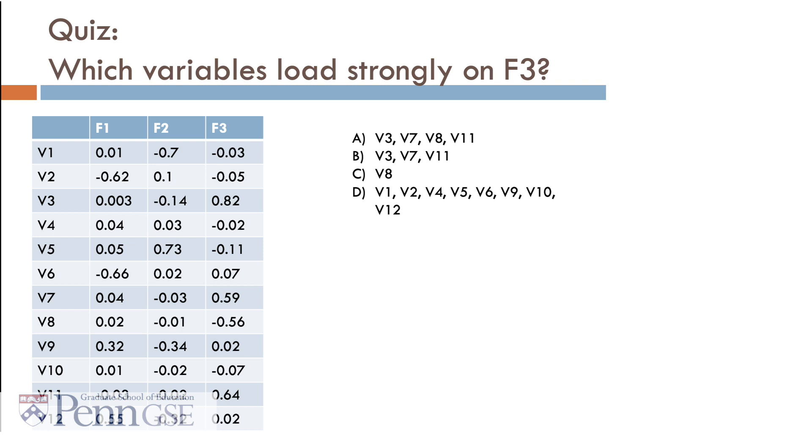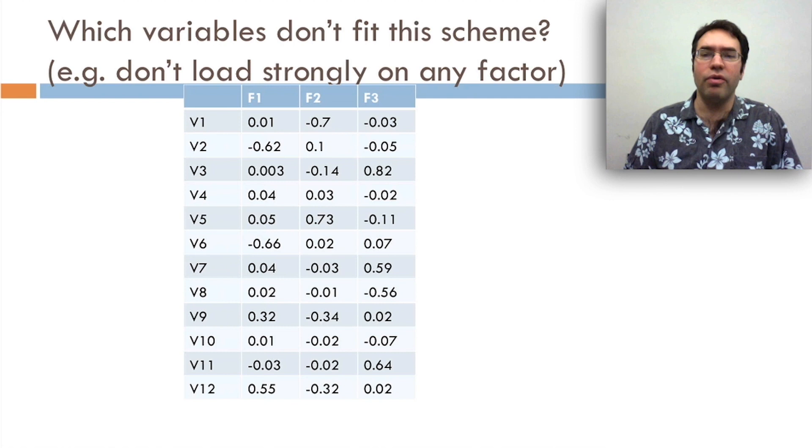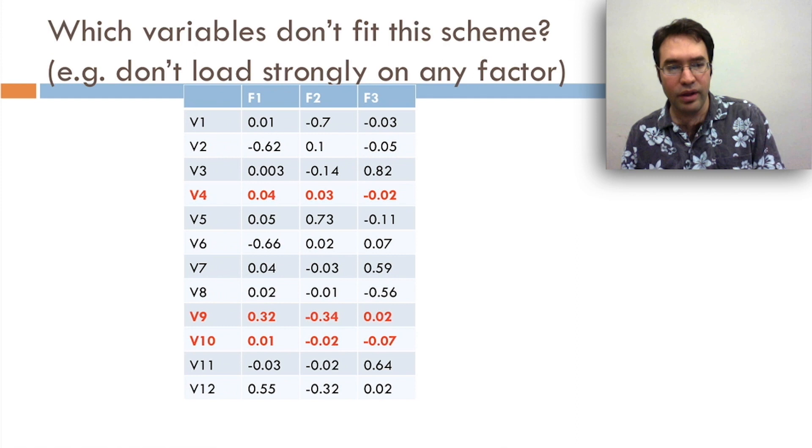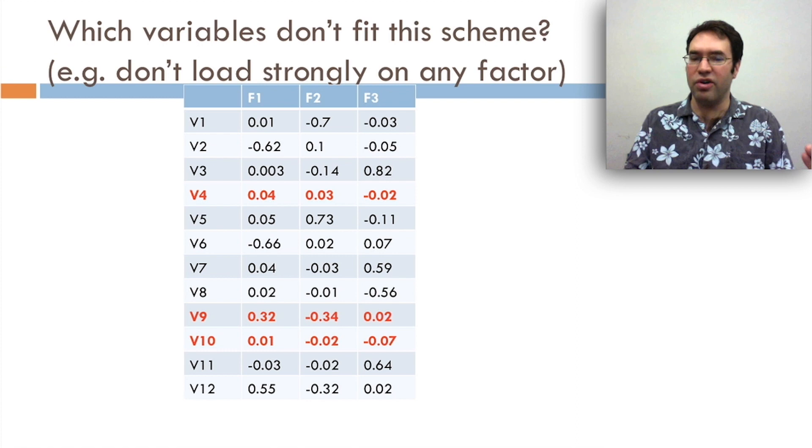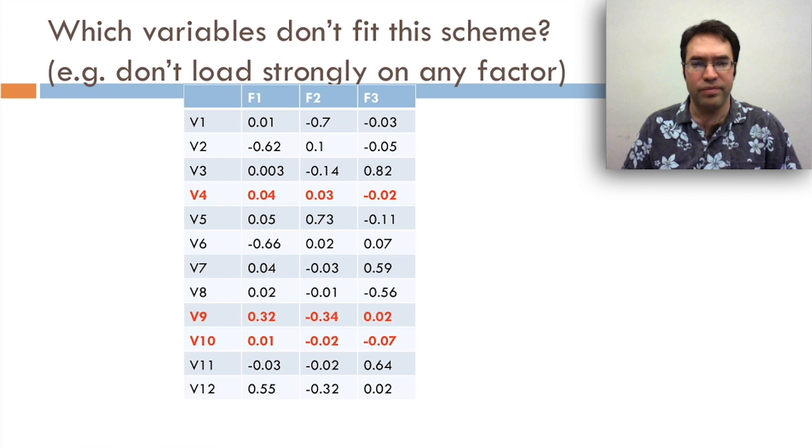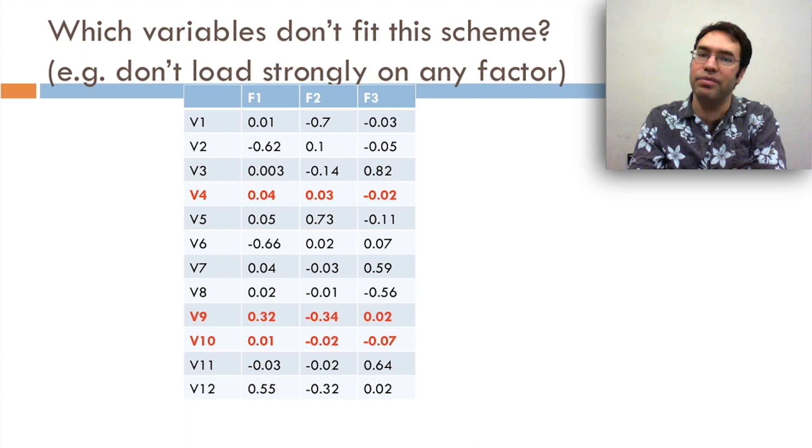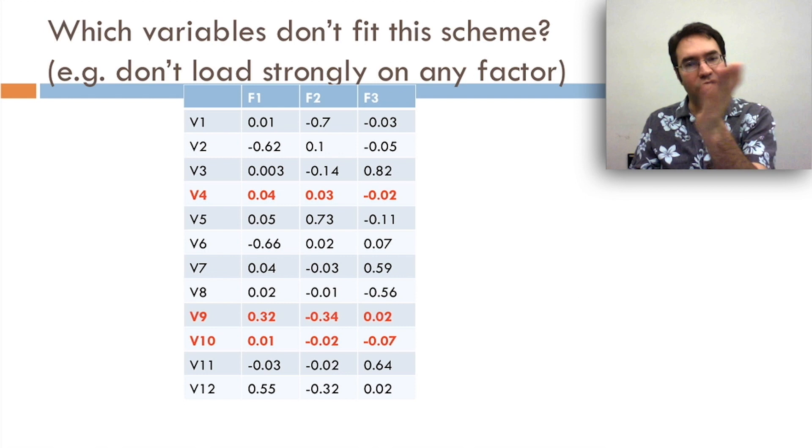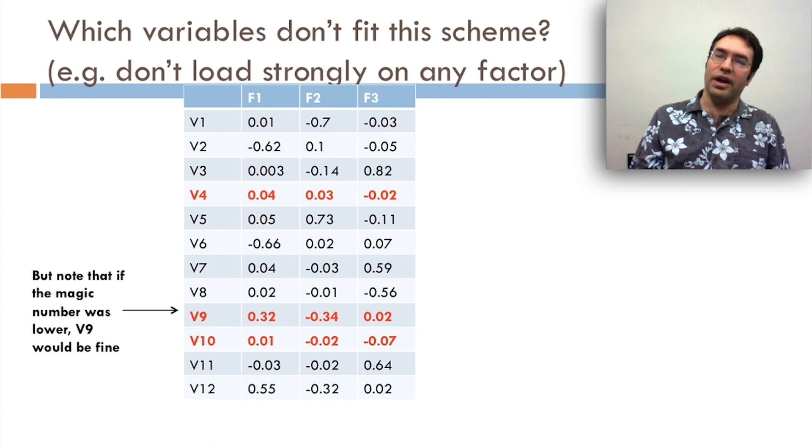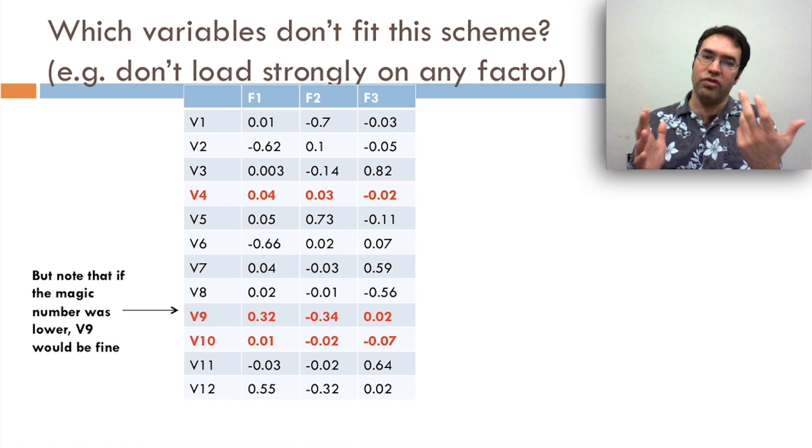So which variables don't fit this scheme? Or in other words, which variables don't load strongly on any factor? You can see that we have V4, which has 0.04, 0.03, and negative 0.02, not good on any factor. And V10, 0.01, negative 0.02, and negative 0.07. What about V9? That's kind of a weird one, right? It actually has two reasonably strong loadings. It's much weaker than any of the other ones in those two factors, and it's below that magic negative 0.4 or 0.4. But it's hard really to say that this completely doesn't fit. It kind of seems to fit two of them. It's halfway in between. If the magic number is lower, V9 would be fine. So what do we want to think about V9? In fact, V9 seems to load on two factors in a moderate degree. Probably means it's actually an item that isn't really quite right for this factor scheme.